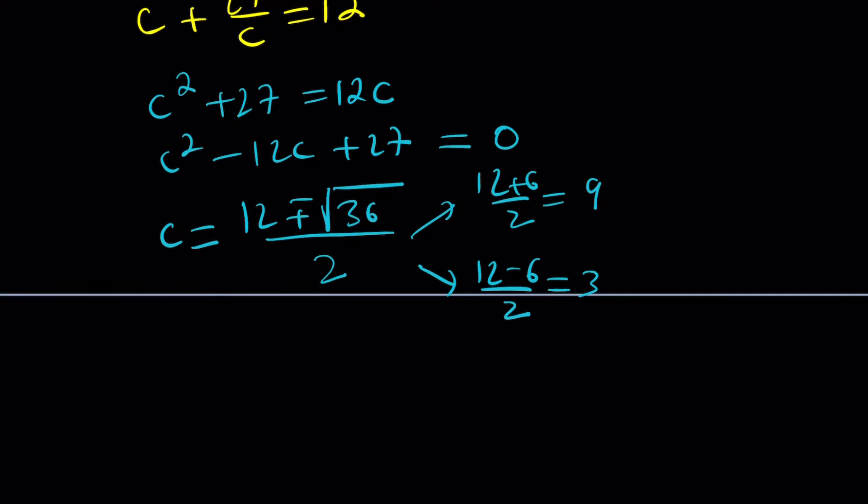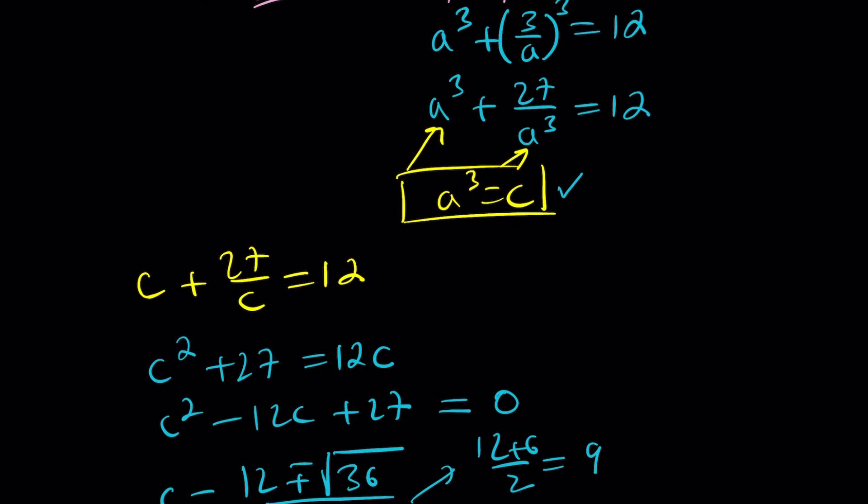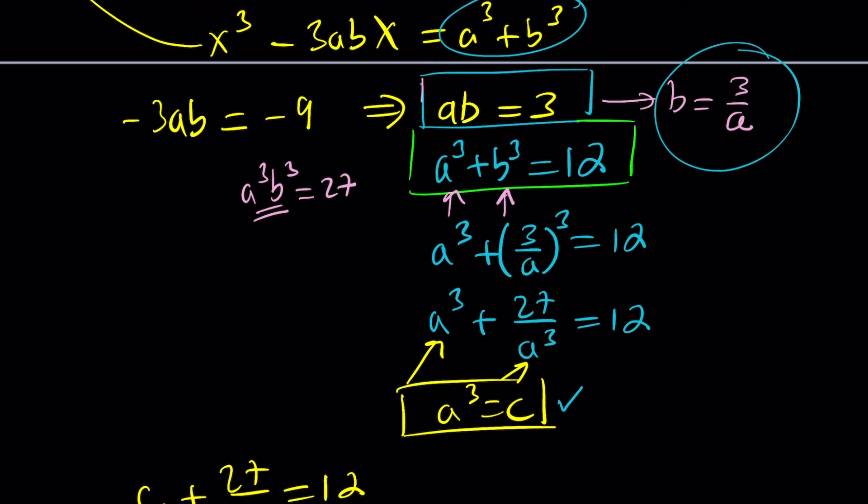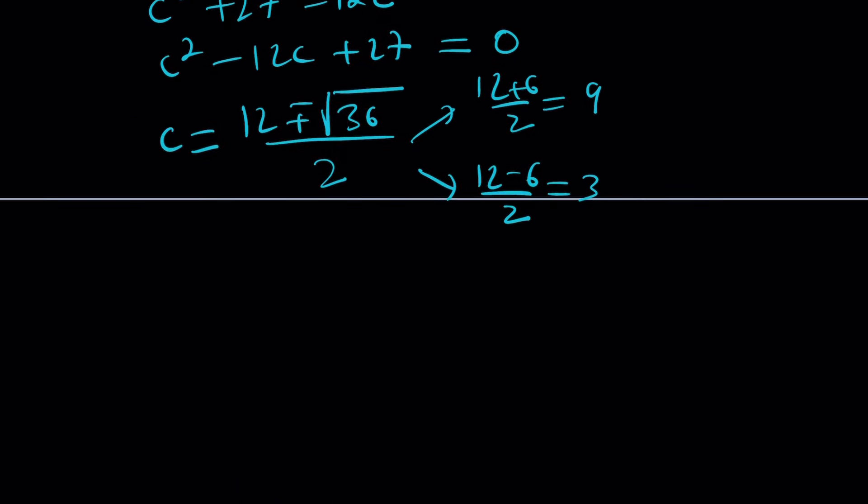Now, where do we go from here? We got the c values. What is c? c equals a³. But of course, a and b are interchangeable, so c is also b³. We're going to pick one of these values for a and the other one for b. Let's set this equal to a³ and the other one equal to b³. From here, you get a equals cube root of 9 and b equals cube root of 3. In other words, one of them is the square of the other.